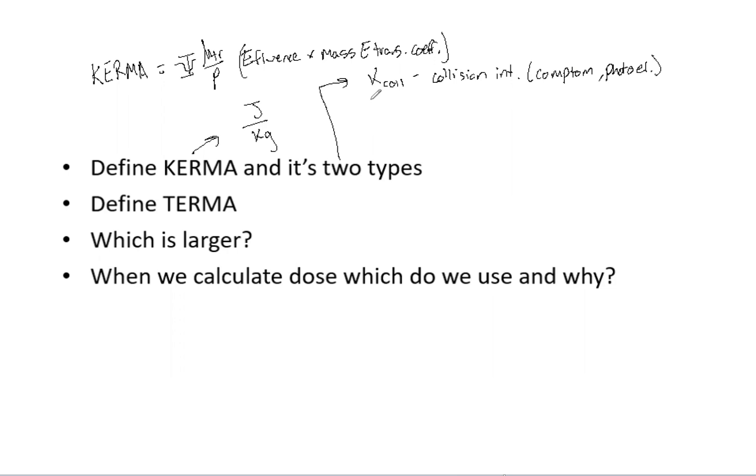And then we also have radiative. And K-Rad is how I'm going to mention that. And that is the energy released in radiative interactions. So that is radiative. And things like Bremsstrahlung, that is important when we are talking about that type of Kerma.